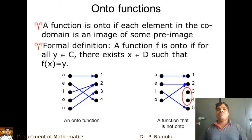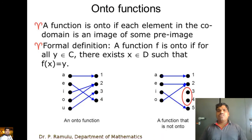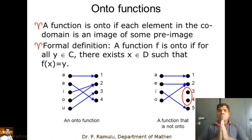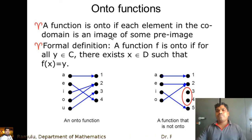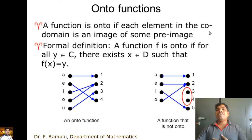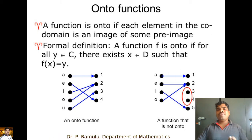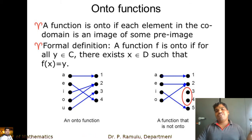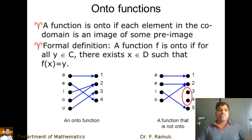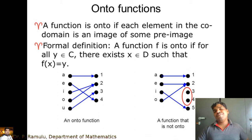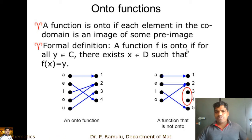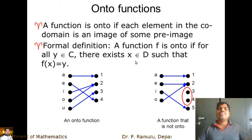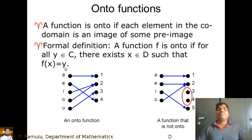Today I am going to discuss onto functions. What is the definition of an onto function? A function is onto if each element in the codomain is an image of some pre-image. Formally, a function f is onto if for all y in the codomain, there exists x in the domain such that f(x) = y.